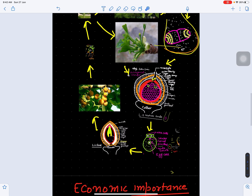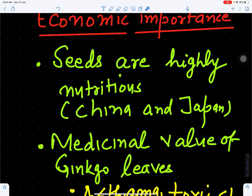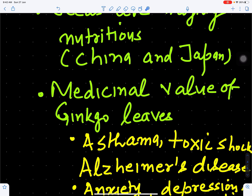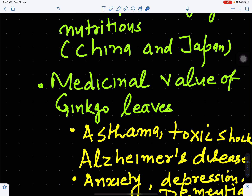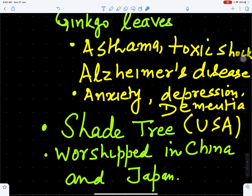Ginkgo biloba has significant economic importance. Its seeds are highly nutritious and are roasted and eaten as food in China and Japan. Ginkgo leaves are used for the treatment of asthma, toxic shock, Alzheimer's disease, anxiety, depression, and dementia. Dementia is memory loss, and Alzheimer's involves neurodegenerative changes in the brain leading to memory loss, which is treated with Ginkgo leaves. In the United States, Ginkgo biloba is grown as a shade tree in many streets, and in China and Japan it is worshipped.